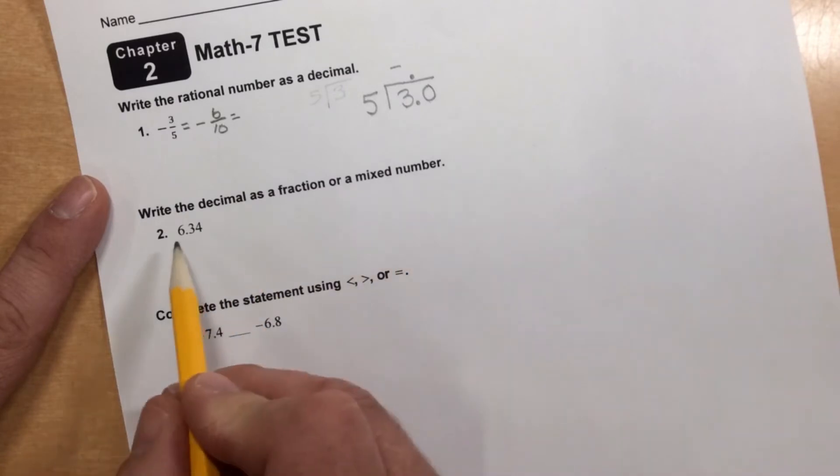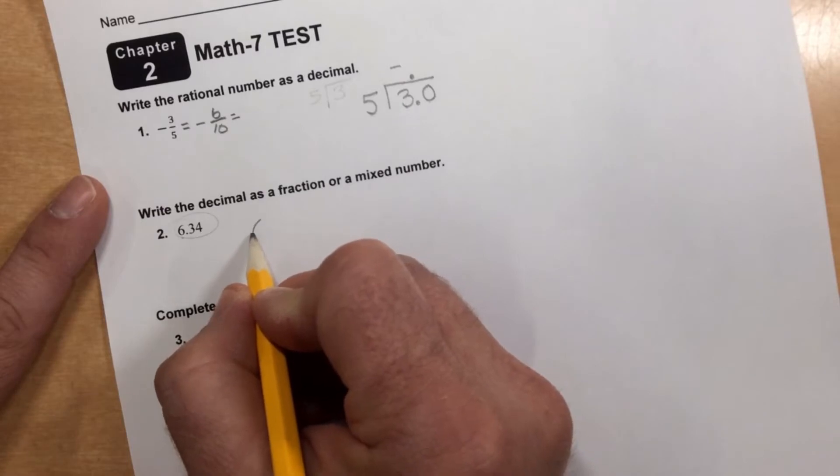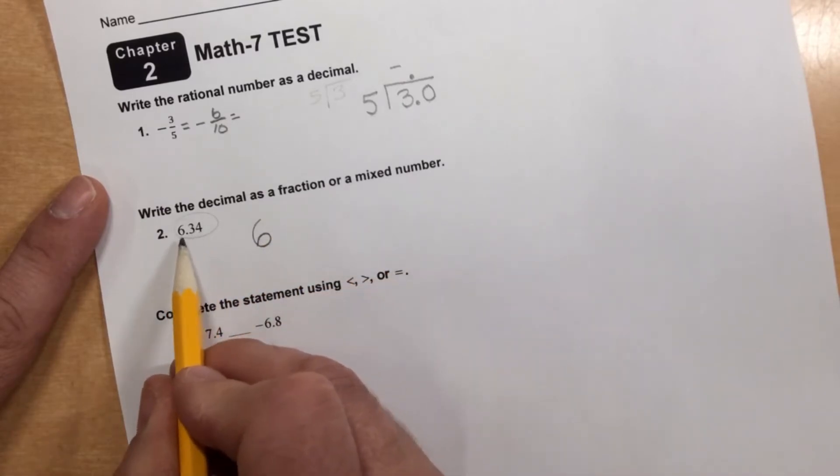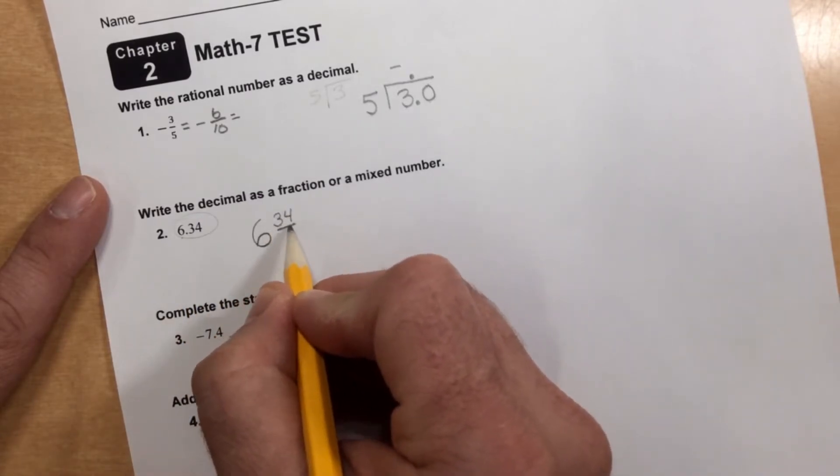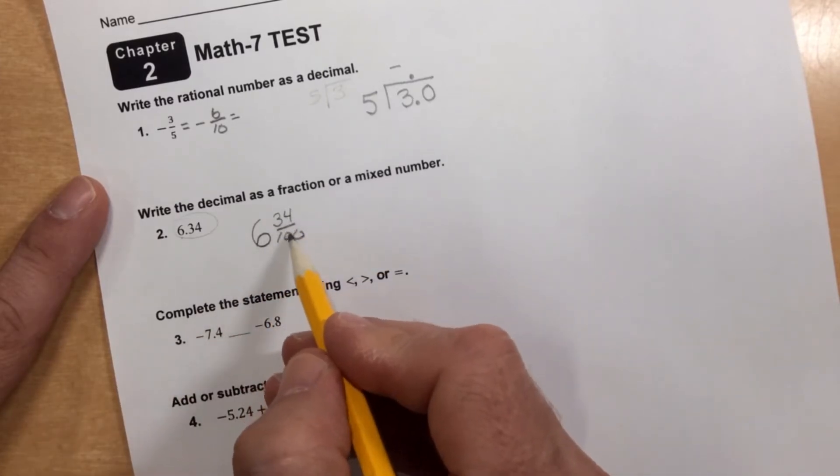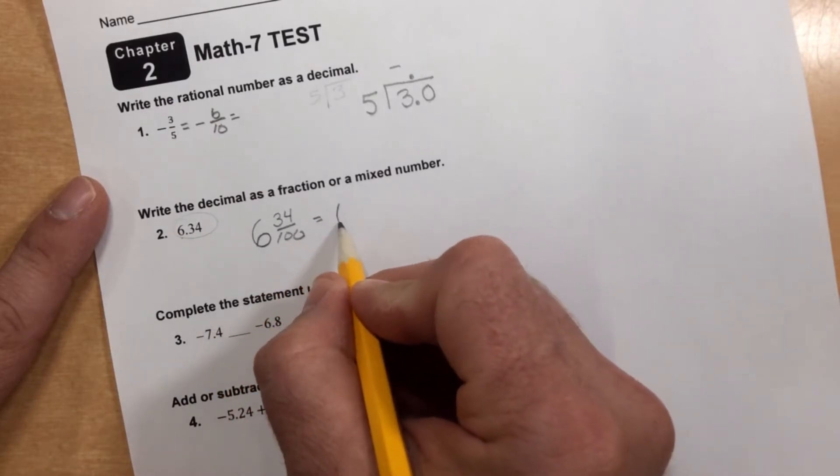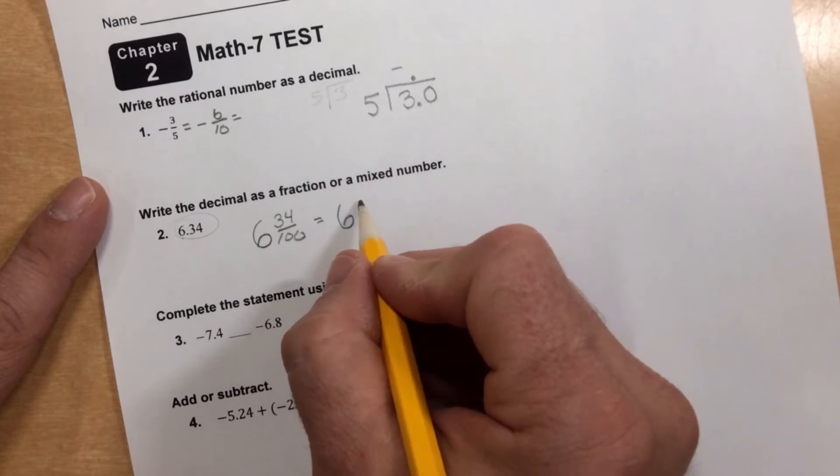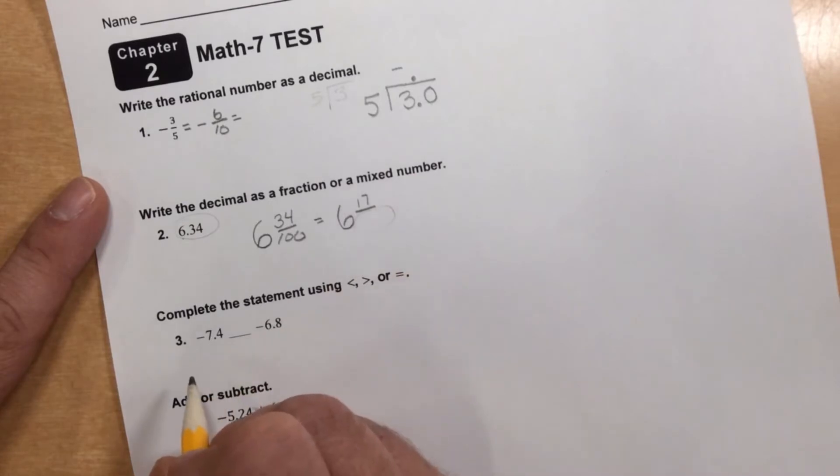For the second one, write the decimal as a fraction or a mixed number. Well, this is going to go into a mixed number because there's a whole number part here, and a mixed number has a whole number part and a fractional part. Well, the whole number part doesn't change, and if we know how to say this correctly, 6 and 34 hundredths, we know how to write it. 6 and 34 hundredths. We do have to simplify this. I know 2 can go into both of those as they're both even. So the 6 stays the same. 2 goes into 34 17 times, and 2 goes into 100 some number of times right there. I'll let you wrap up that problem, although it is pretty simple.